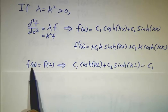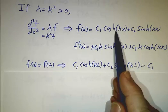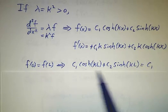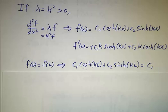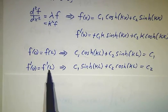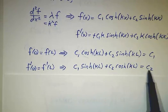And now we set f(L) equal to f(0). f(0) is c₁ times 1 plus c₂ times 0, which is c₁. f(L) is this expression. So this gives us an equation for c₁ and c₂. If you set f'(L) and f'(0) to be the same, that gives you another equation for c₂.